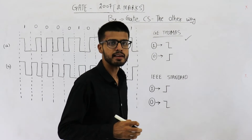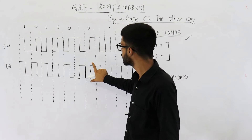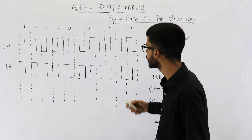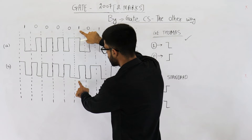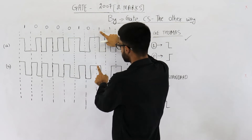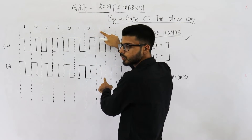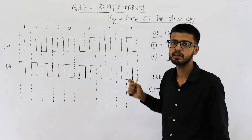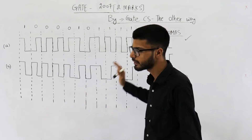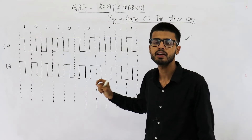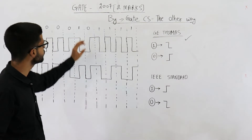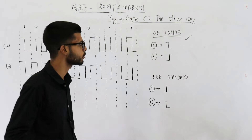In the second part, they are asking: if this data is encoded into waveform B, what encoding scheme was used? We can see that here 1 is represented by a transition from low to high, and elsewhere 1 is represented by a transition from high to low. That means there is no fixed representation of 1. Similarly, the representation of 0 is also not fixed. This strongly suggests this encoding is differential Manchester encoding. Let us first understand what differential Manchester encoding is, then verify.